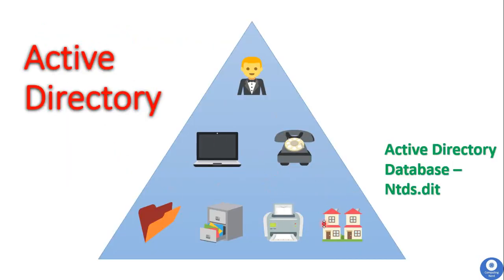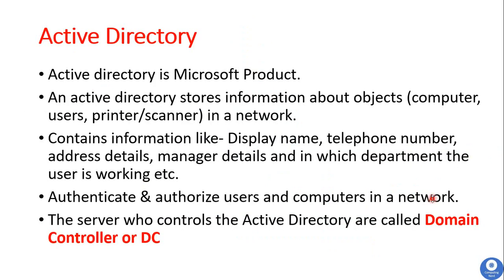Here is a simple diagram of an Active Directory. The database name of Active Directory is ntds.dit, and the ntds.dit file is the heart of an Active Directory. You can manage user permissions and authentication from Active Directory, including network access, printer or scanner access, VPN connectivity, and you can create security policies in your organization.